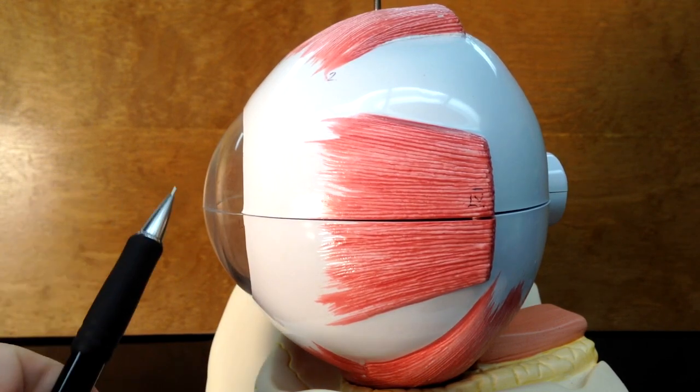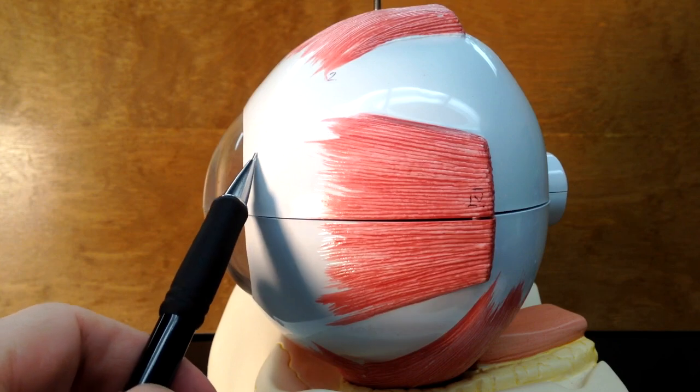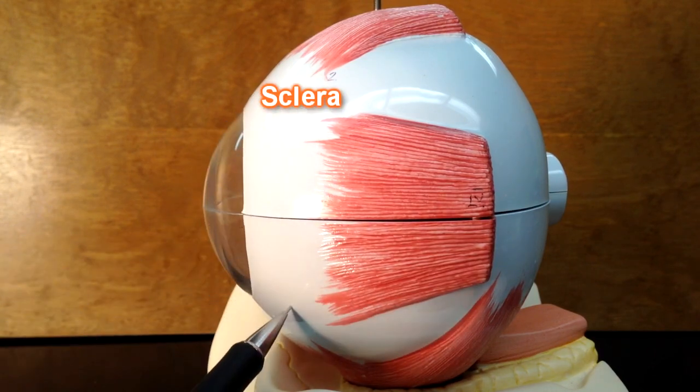But that's the cornea, and the cornea is continuous with this white layer right here. This is the sclera.